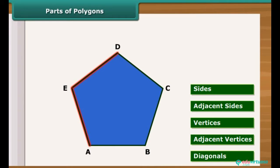The meeting point of a pair of sides is called its vertices. Here, A, B, C, D and E are the vertices of given polygon.